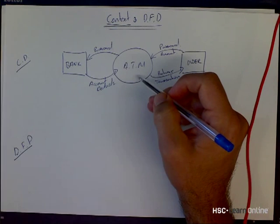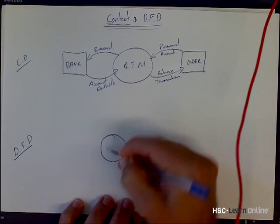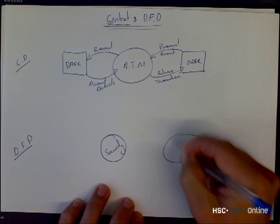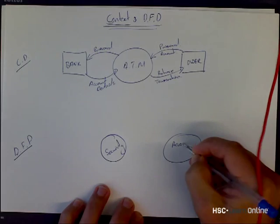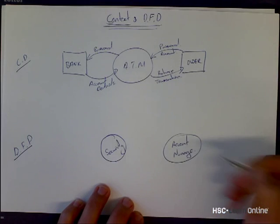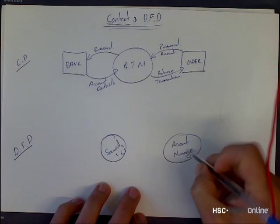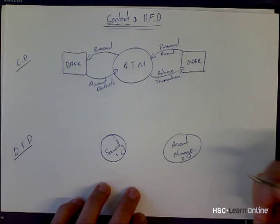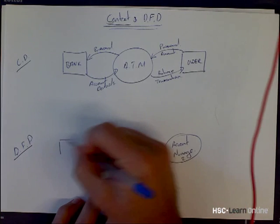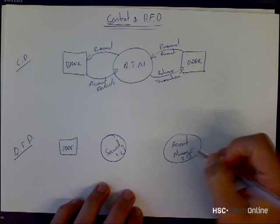I'm going to break this ATM down into two systems: one is security and the other is account management. So instead of just one process in the context diagram, I've got security as process one and account management as process two. I still have the same external entities — the user over here who's going to talk to the system and the bank later on.